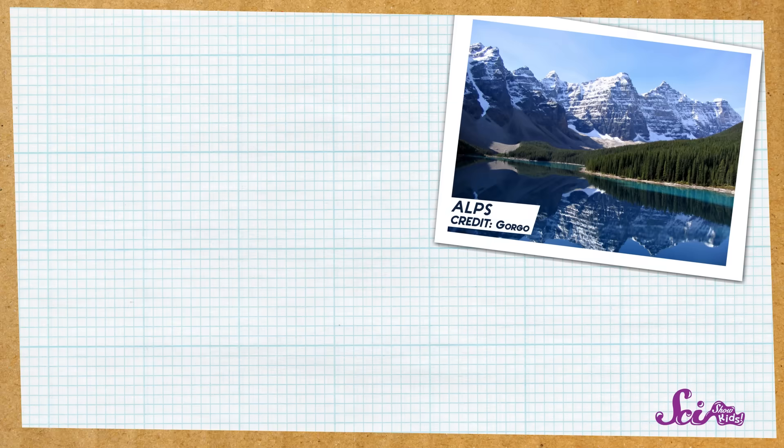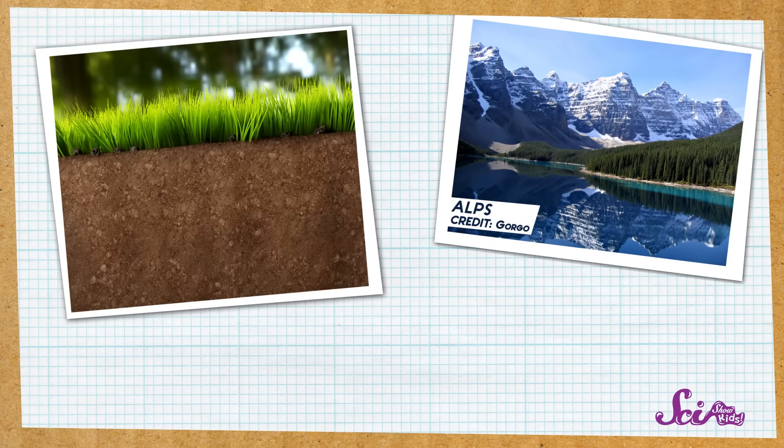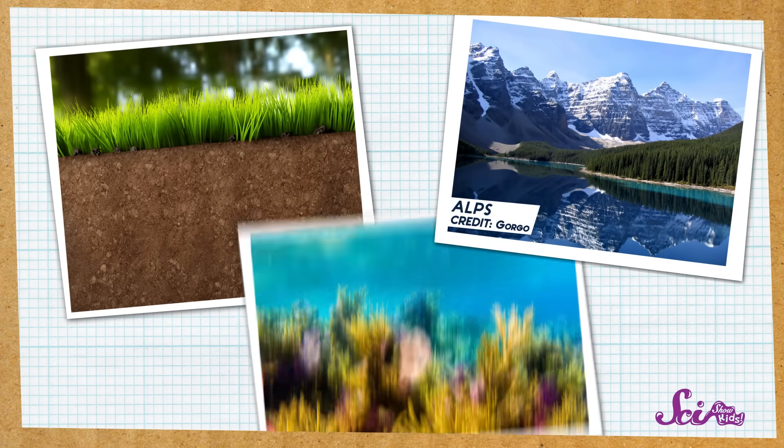It includes huge soaring mountains, the rocks and dirt under our feet, and even the land underneath the ocean. Just like the shell of an egg, the crust is the thinnest layer. It's thicker in some places than others, but generally, it's between 8 and 40 kilometers thick. Way deeper than you can ever hope to dig.